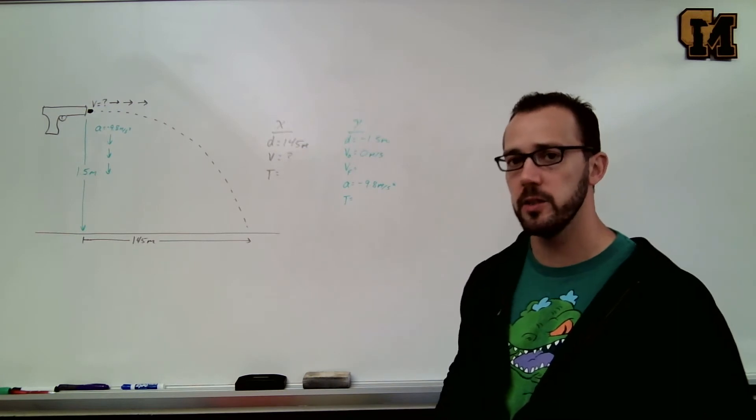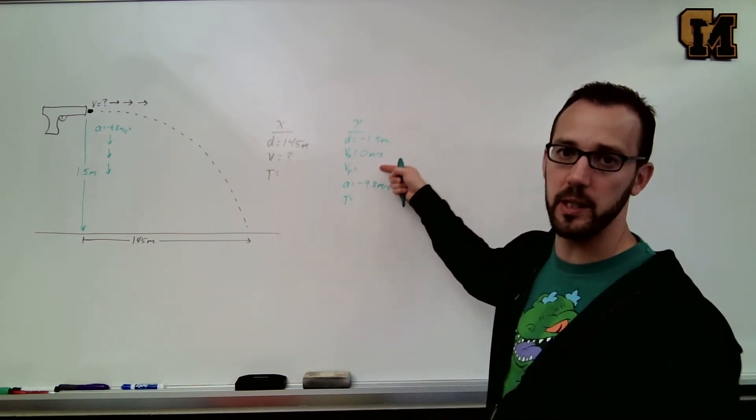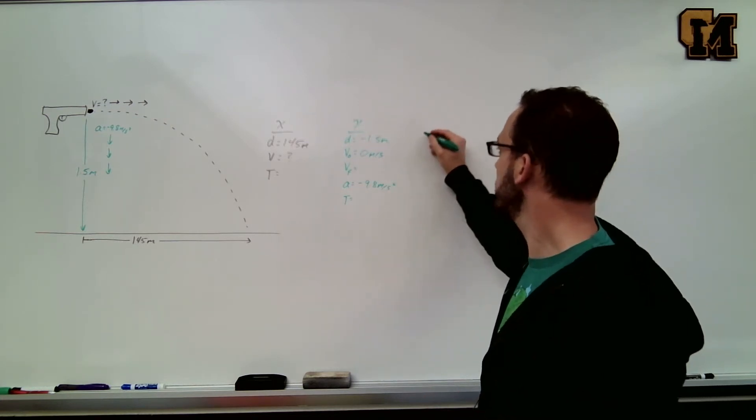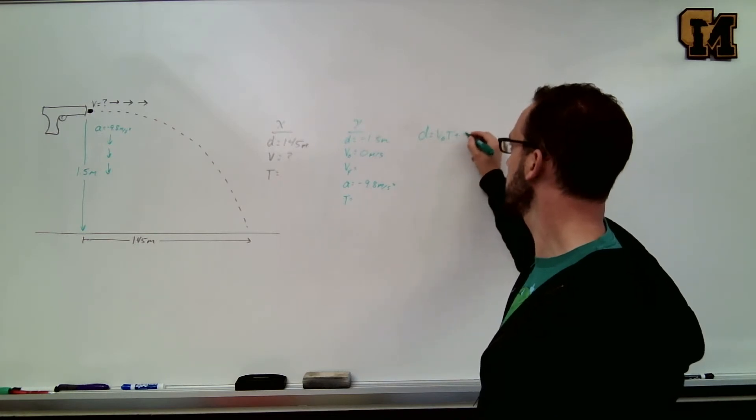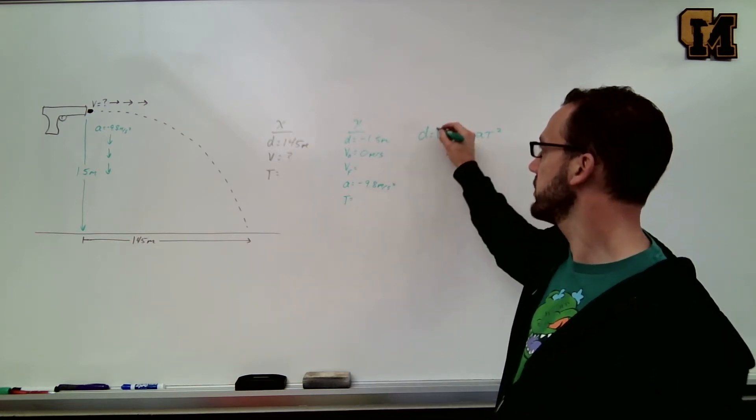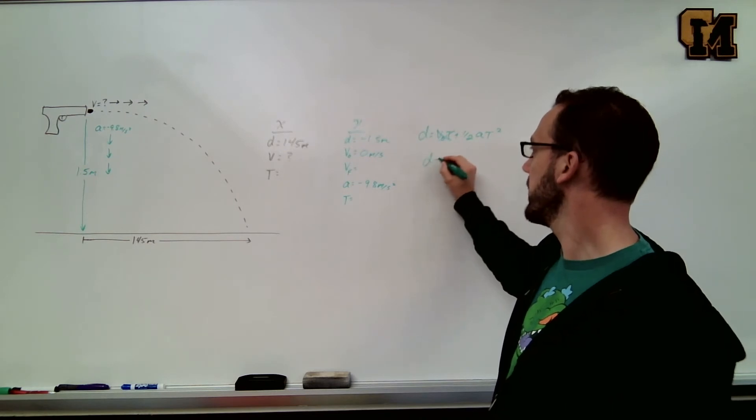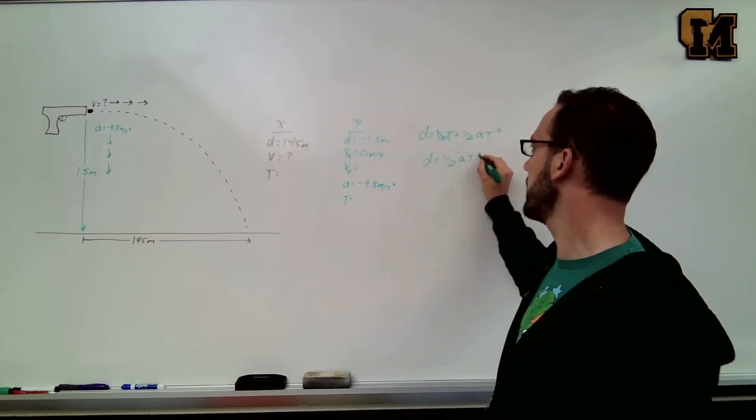So in the y direction, solving for time, I'm going to pick the equation that does not have Vf because that's the thing we don't have and don't want. So the equation without Vf is d equals V0t plus one-half At squared. Because V0 is zero, this term goes away. We don't have to worry about it. Making our math a little bit easier, d equals one-half At squared.